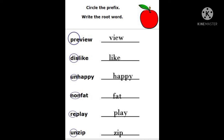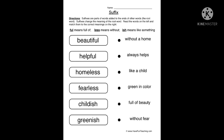Preview — 'pre-' is the prefix and 'view' is the root word. Dislike — 'dis-' is the prefix, 'like' is the root word. Unhappy — 'un-' is the prefix, 'happy' is the base word. Nonfat — 'non-' is the prefix, 'fat' is the base word. Replay — 're-' is the prefix, 'play' is the base word. Unzip — 'un-' is the prefix, 'zip' is the root or base word.